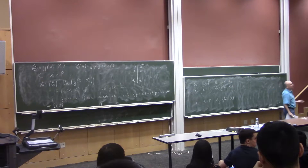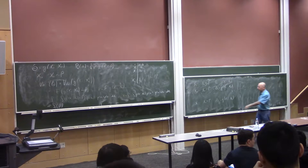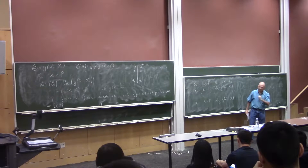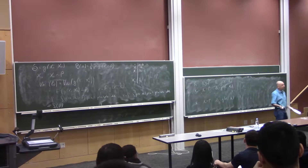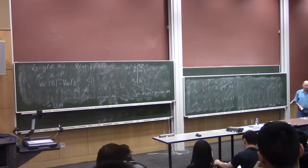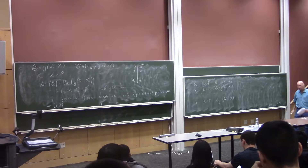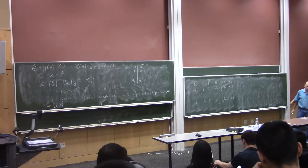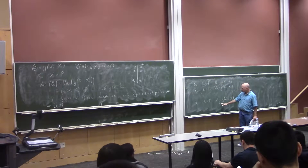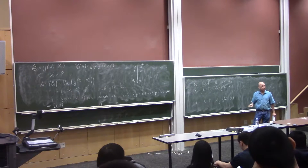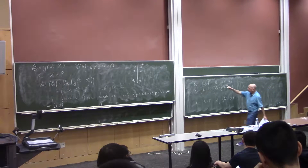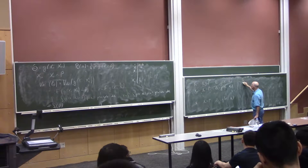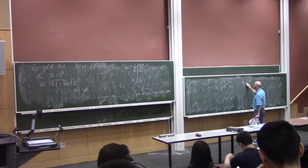For a concrete example: suppose we're dealing with the median. If I told you the true distribution, you could draw n observations to compute the median, then draw n more observations to compute the median again, do that a thousand times. Now you have a thousand observations from the sampling distribution of the median.